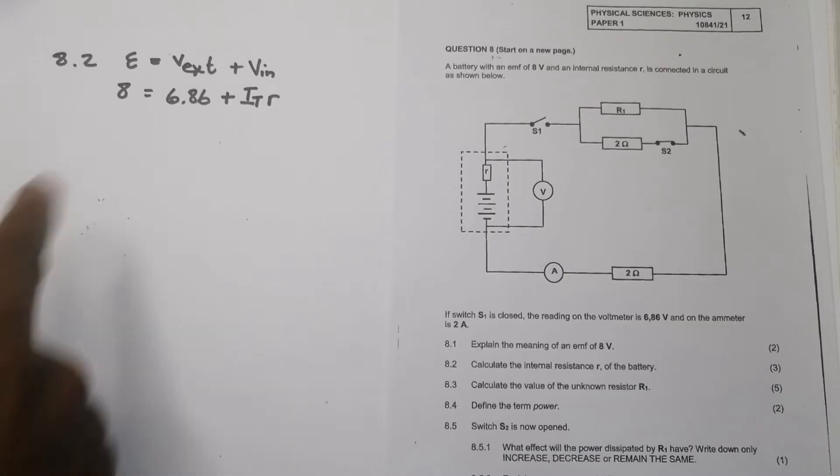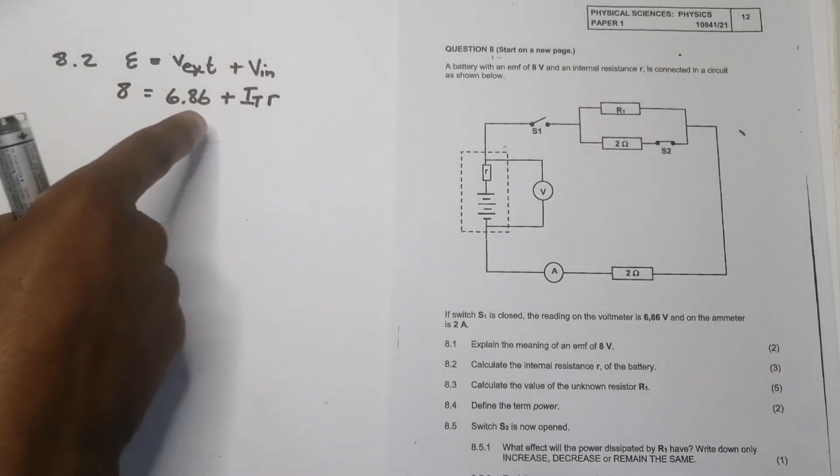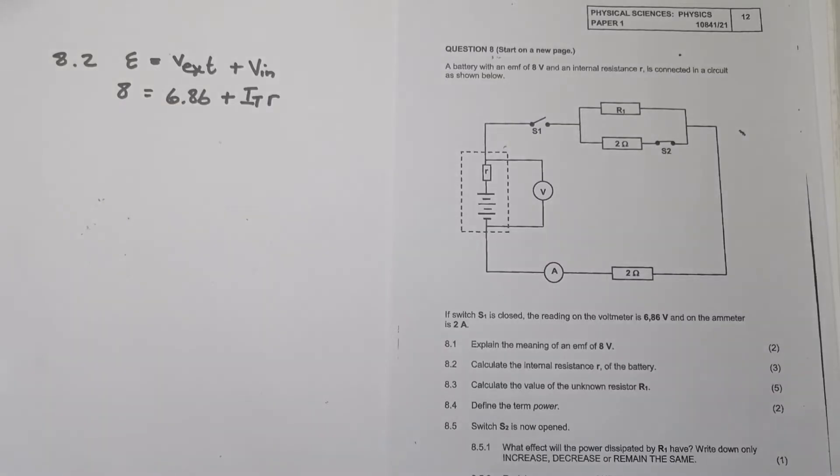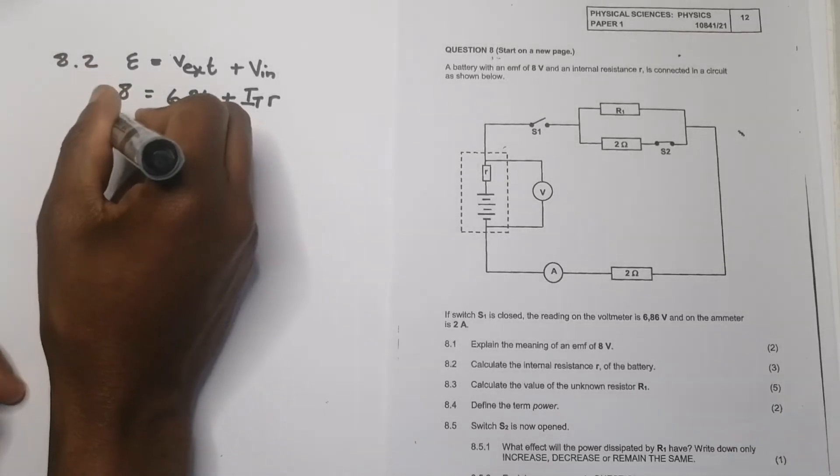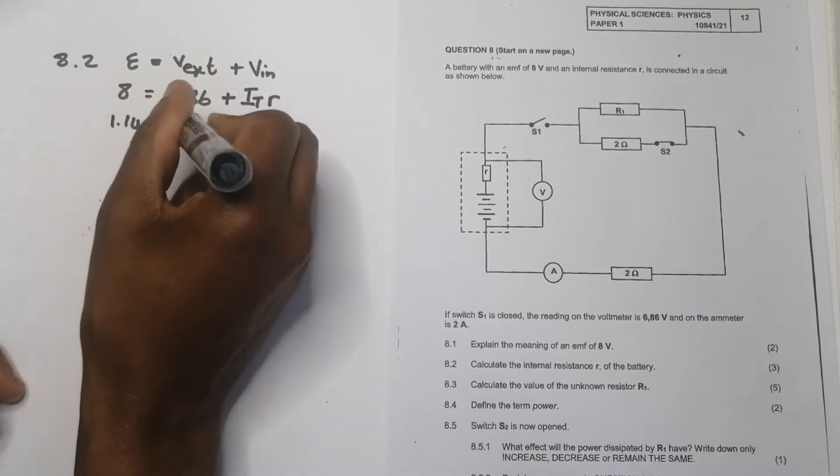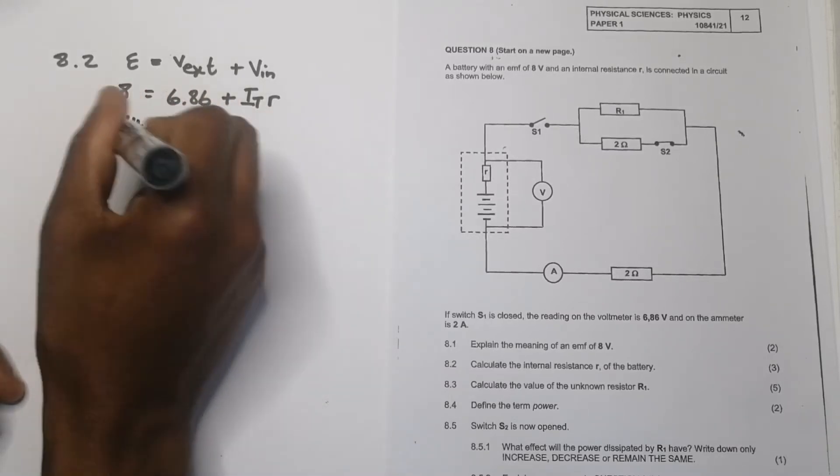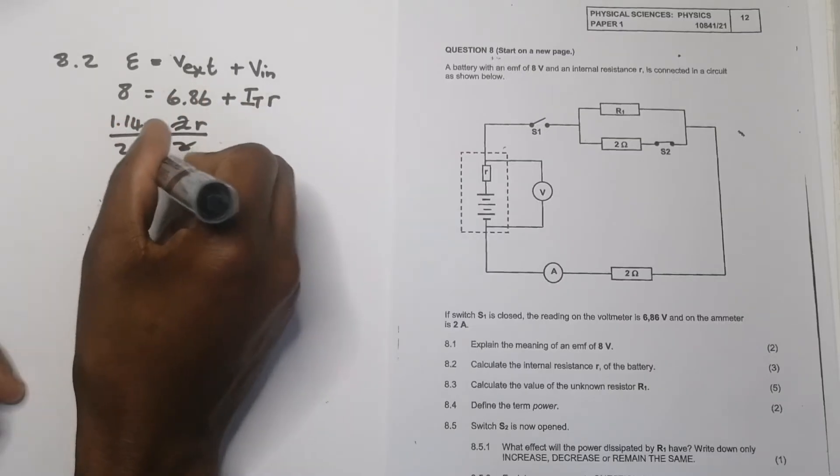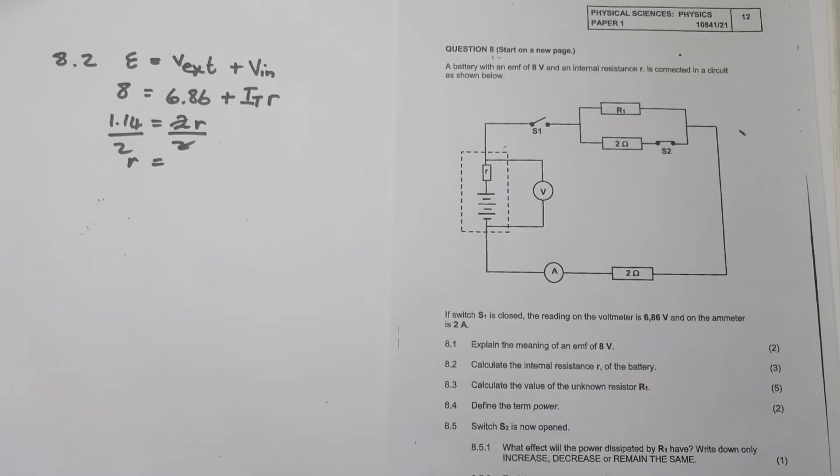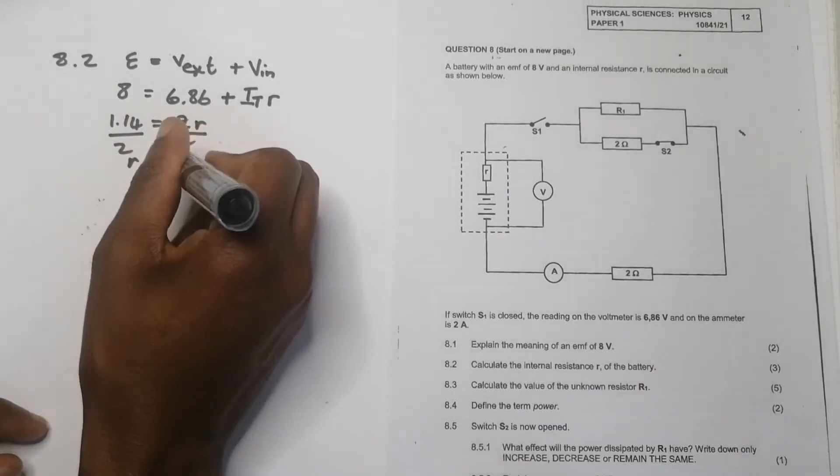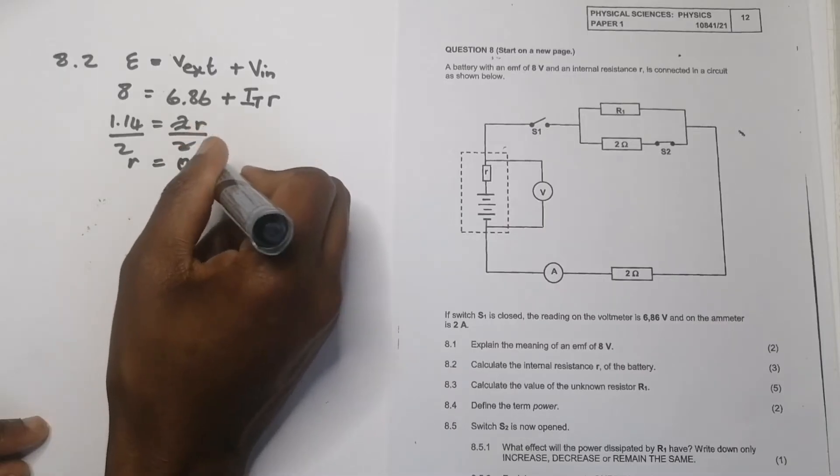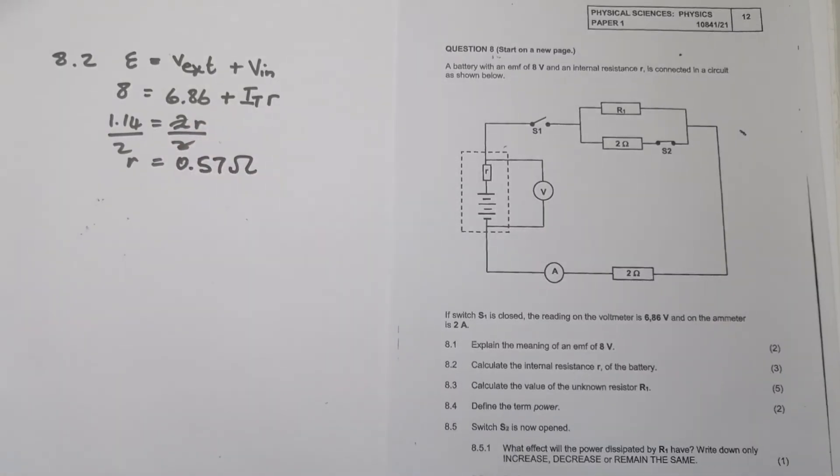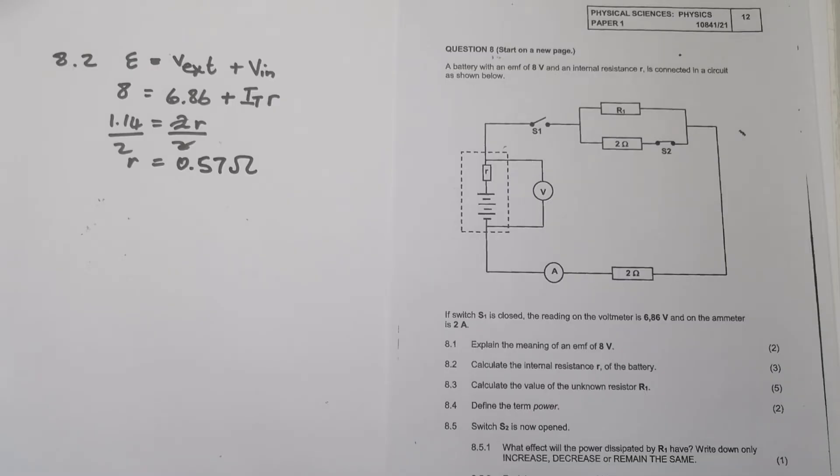Alternatively, what you could have done is simply calculate V internal, which would be the difference between the two. So that would be 8 minus 6.86, that gives us 1.14. The difference is 1.14, our current is 2, and we're looking for R. We can divide both sides by 2 and get the internal resistance. Dividing that by 2, I get an internal resistance of 0.57 ohms.